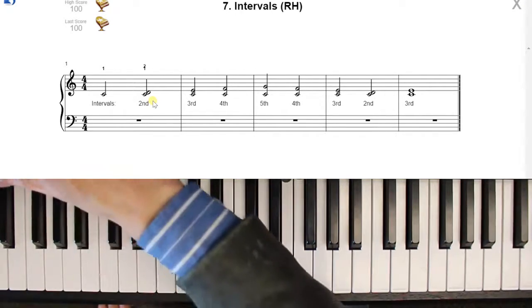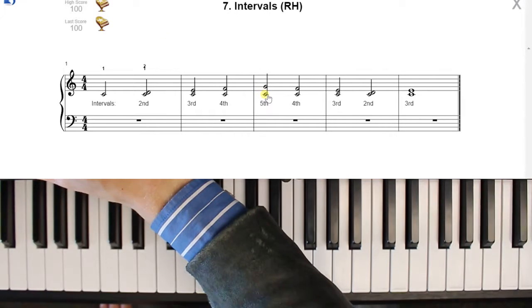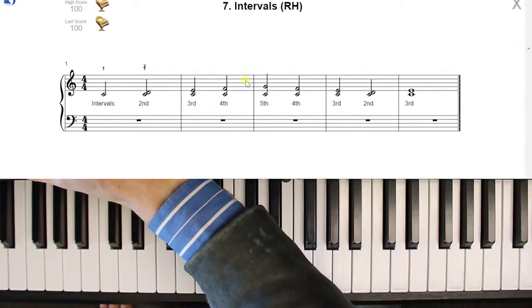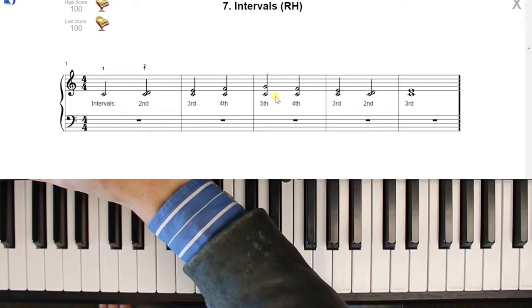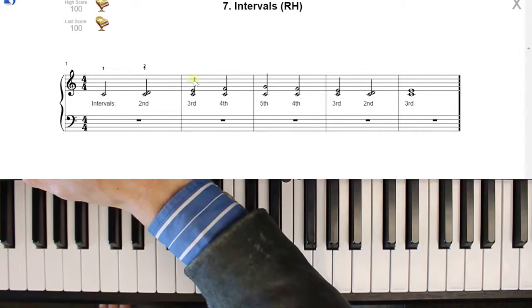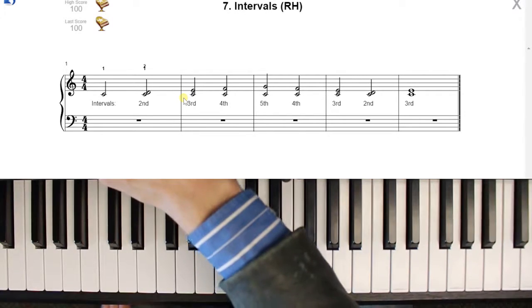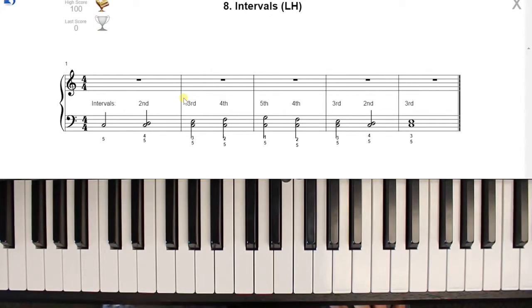Memorize what these look like. Instead of reading them as individual notes, so this is a C and a G, memorize this whole thing. So when you see this, you say, oh yeah, I know that one. That one's my fifth interval. Or when you see this one, you say, oh yeah, I know that one. That one's my third interval. You're going to be playing intervals a lot, so take the time to memorize what they look like.